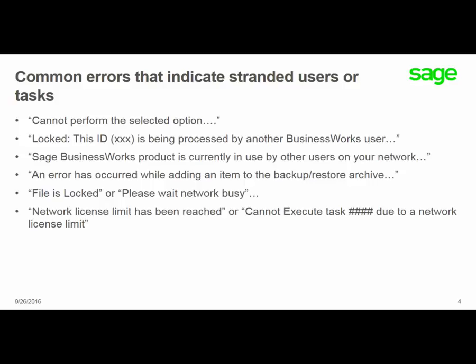Besides the previous causes, some common errors that may indicate that you have a stranded user or task include: cannot perform the selected option when trying to access a task that requires an exclusive lock, such as trying to access a payroll task where the employee ID screen is open. You might also get a message like locked.